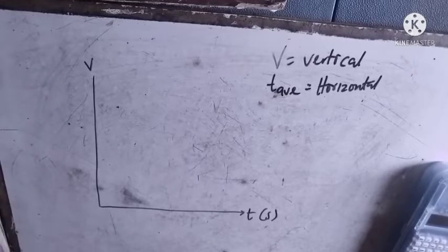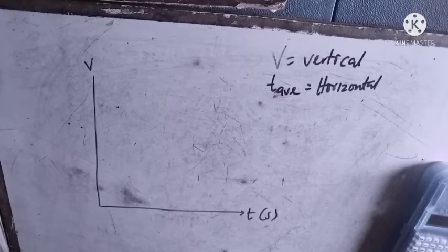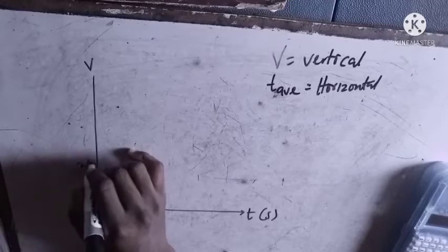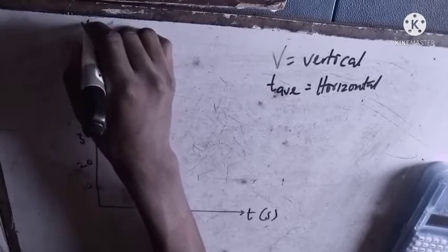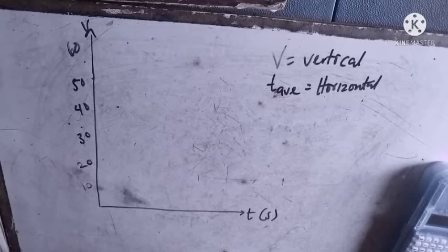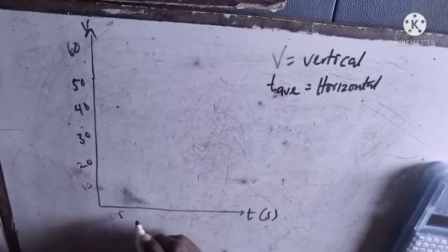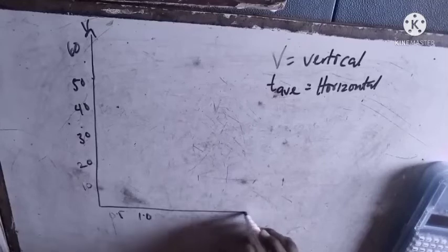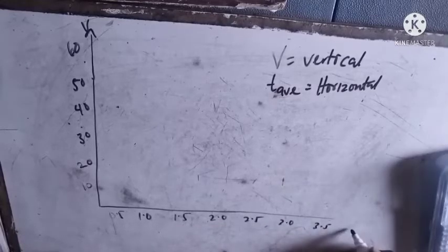If you look at the numbers, they are in the progression of 10, 20, 30, 40, 50, so you can just number it that way: 10, 20, 30, 40, 50, 60. Your t-average is in the progression of 1, 1.5, 2, 2.5, 3, 3.5, so start with 0.5, 1.0, 1.5, 2.0, 2.5, 3.0, 3.5, up to 4.5.